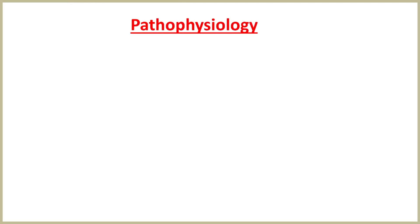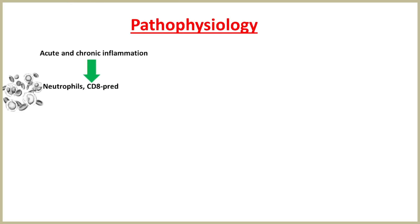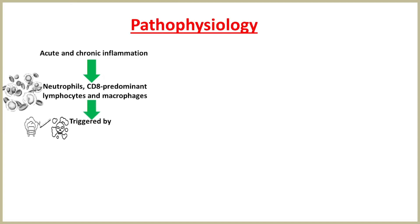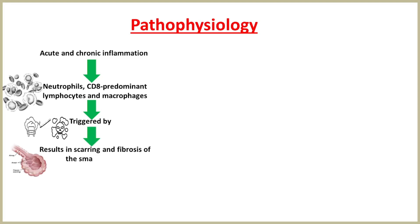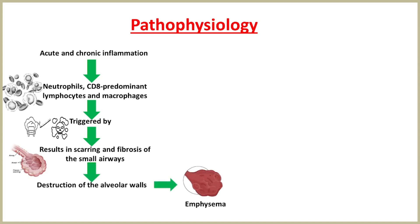Both acute and chronic inflammation predominantly caused by neutrophils, CD8 predominant lymphocytes and macrophages, which is triggered by etiological agents such as smoking, results in scarring and fibrosis of the small airways. In addition, there is destruction of the alveolar walls, which results in emphysema.